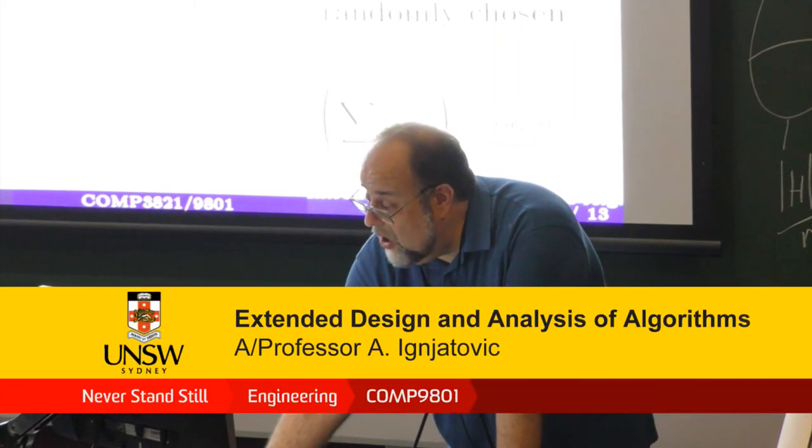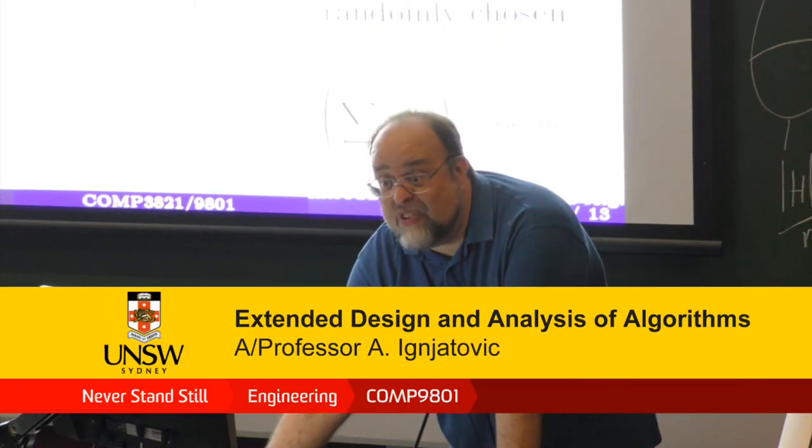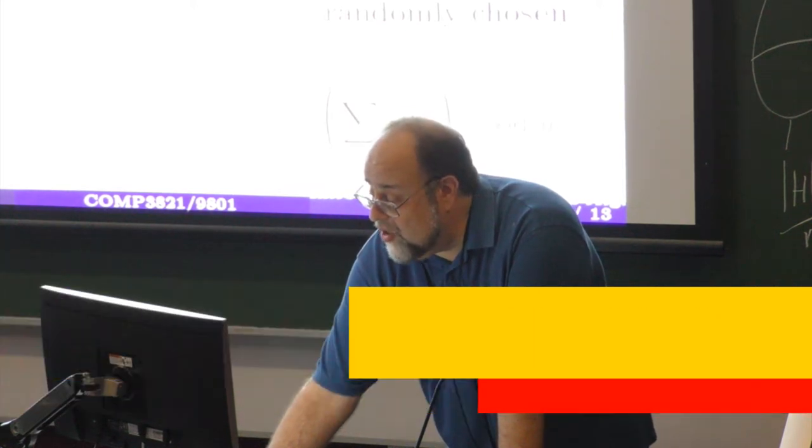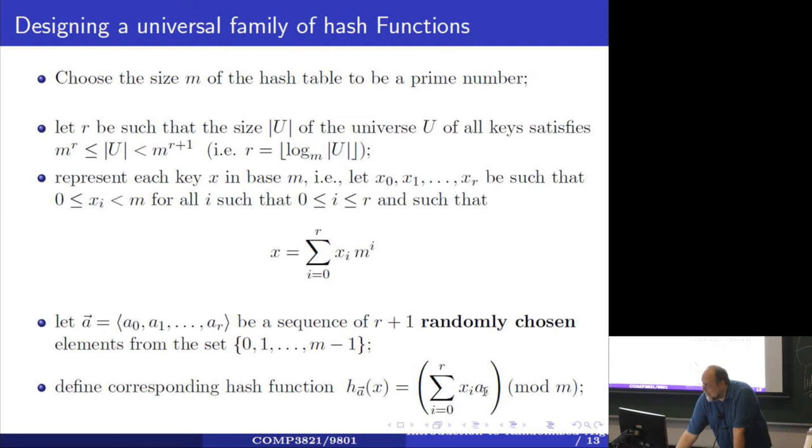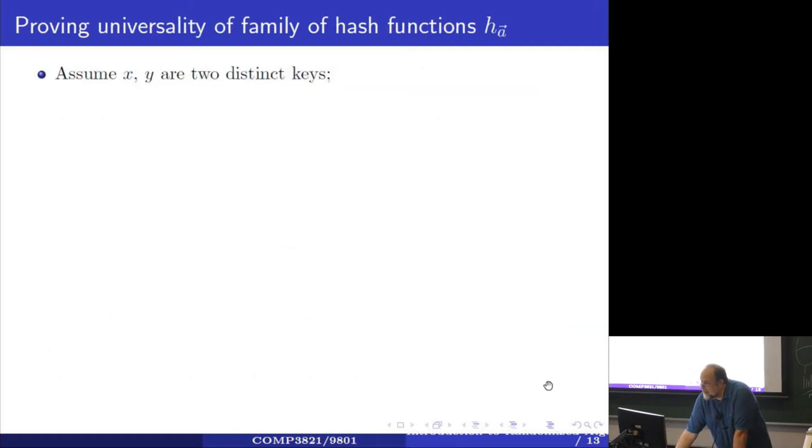Your hash function will always equal this expression. The only thing chosen randomly is this parameter vector a. So you always use the same type of hash function. The only thing chosen at random is this random vector to which you project the key, finding the scalar product between x and a. And you mod it out by m because this value being the index in the hash table has to be smaller than m.